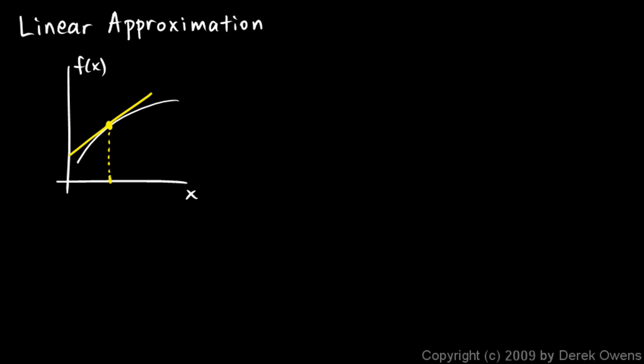So the tangent line can be used as an approximation to the curve if you're near this value of x. Suppose we're over here at some other value of x, and we want to find the value of the function right here — we're looking for this y value for this x value. The idea is that we can use the y value on the tangent line as a good approximation; it will be off just a little bit, in this case a little bit higher.